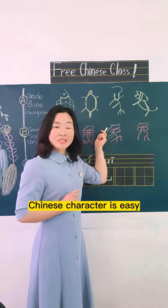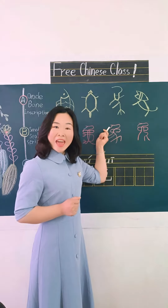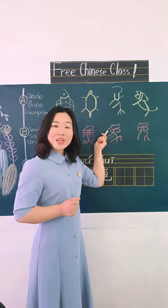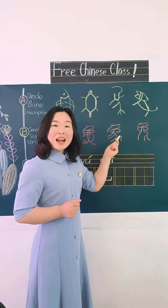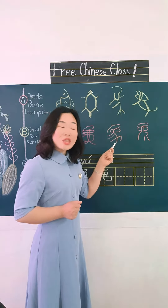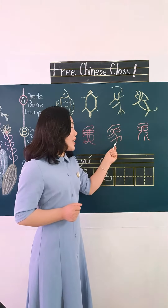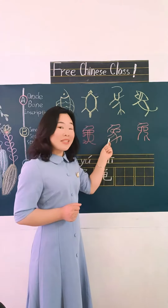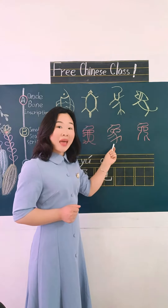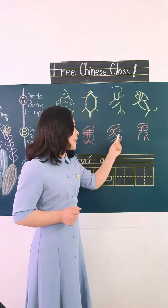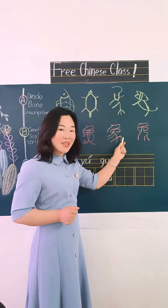Elephant in Chinese. Head, two eyes, long nose. Body, front leg, behind leg, tails.